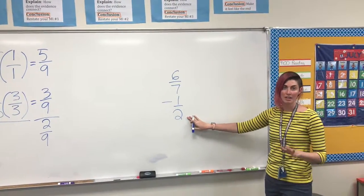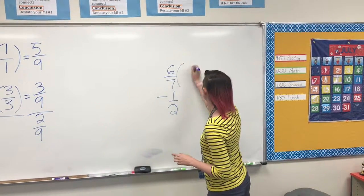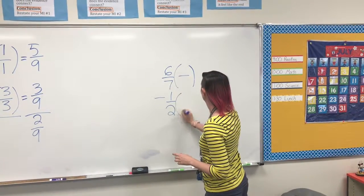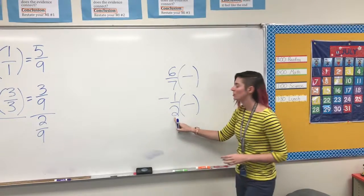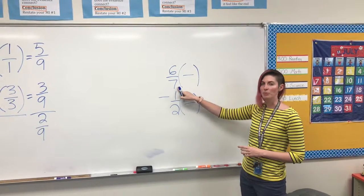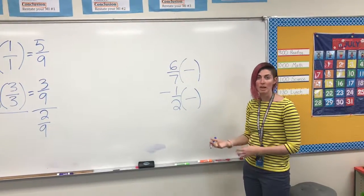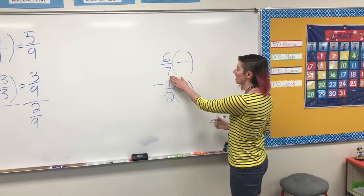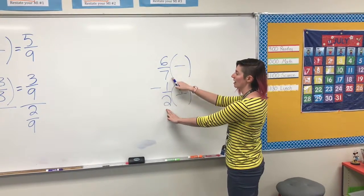Different denominators. We need a common denominator. Setting up our parentheses. 2 cannot turn into 7 when we multiply it, so we're multiplying the old denominators together. I'll take 7 times 2, and 2 times 7 here.